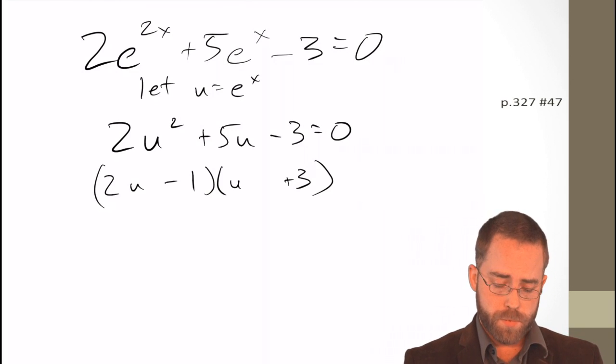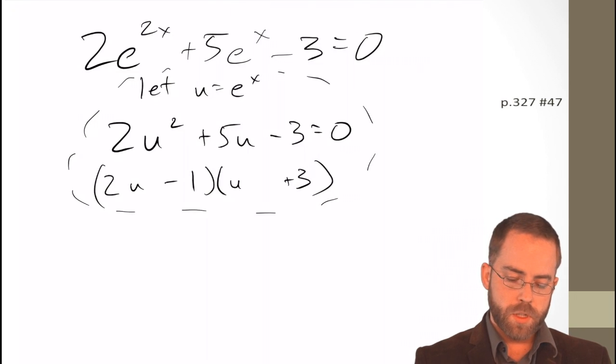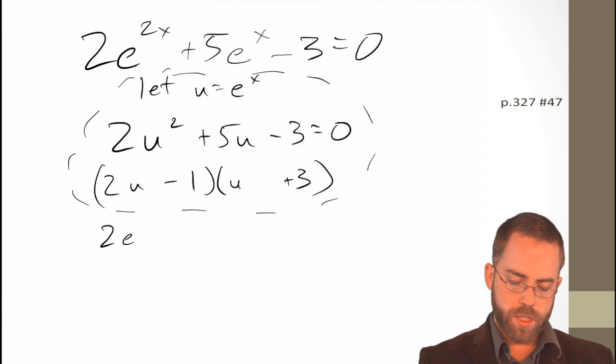So, now, if I'm looking at this and I say, alright, let me unsubstitute now. Come back out of the thought bubble and say 2 e to the x minus 1 or e to the x plus 3 all equals 0. That is something then that splits into two parts.